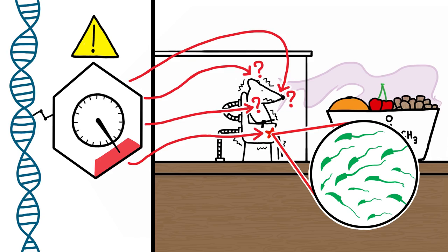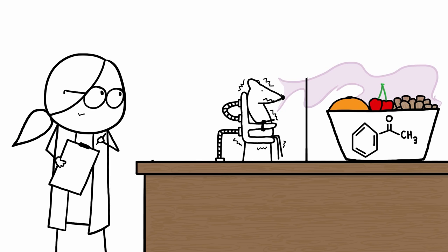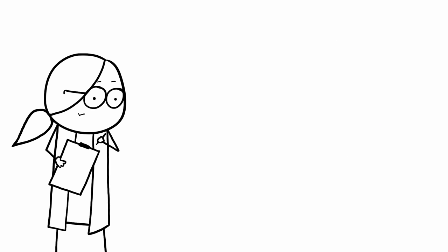The rats' sperm cells, which would one day pass along the tweaked genetic material, making the next generation of rats super-sensitive to acetophenone. Rodents aren't the only creatures demonstrating this weird type of inheritance.